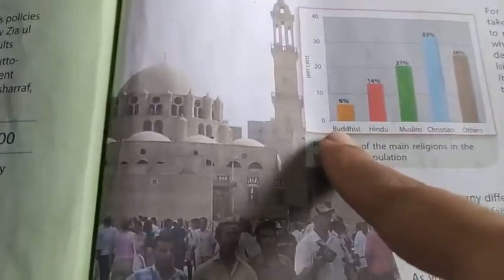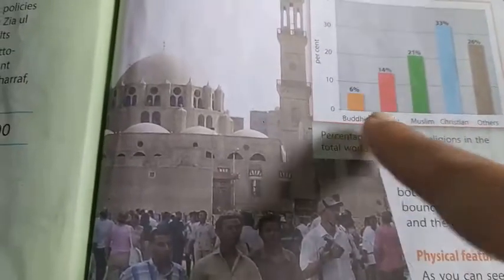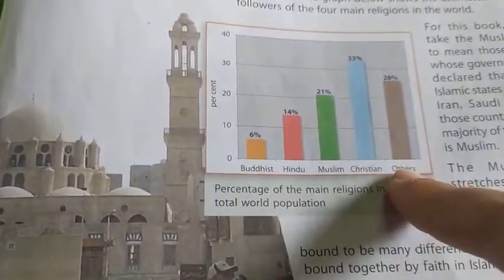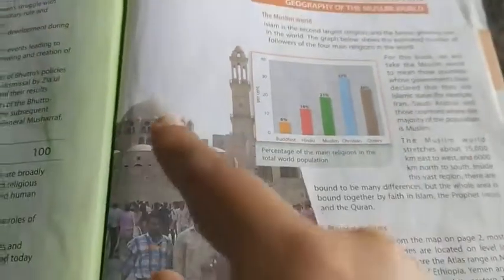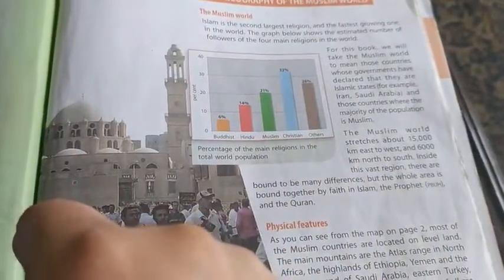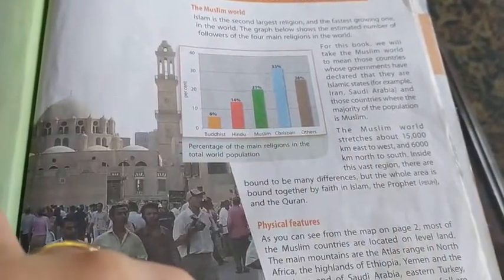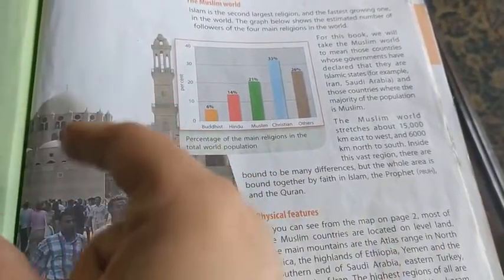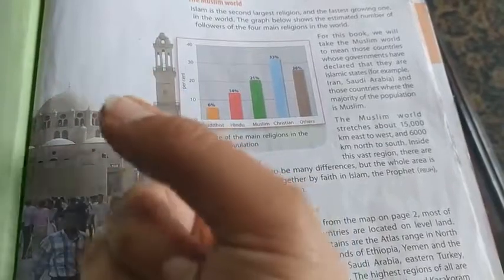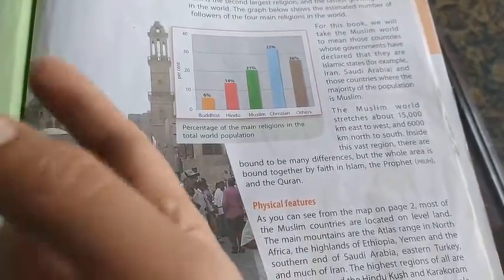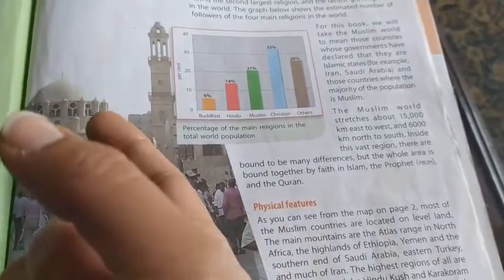The Buddhists constitute 6% of the total world population, Hindus 14%, Muslims 21%, Christians 33%, and others 26%. The Muslim world stretches about 15,000 km east to west and 6,000 km from north to south. As Muslims, we all follow the teachings of our Holy Prophet Hazrat Muhammad and our Holy Book, the Holy Quran.